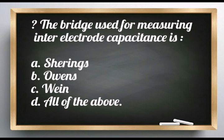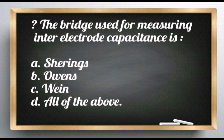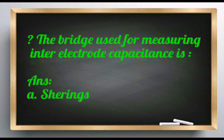Question: The bridge used for measuring inter-electrode capacitance is: Schering's, Owens, Wien, or all of the above. The bridge used for inter-electrode capacitance.